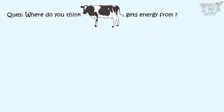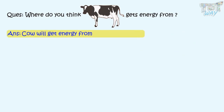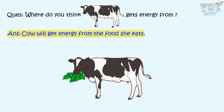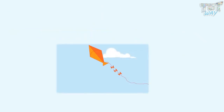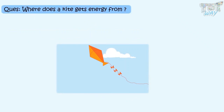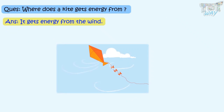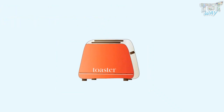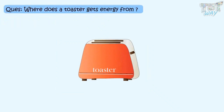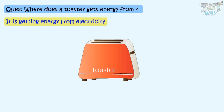Where does the cow get energy from? The cow gets energy from the food she eats. A kite flies high in the sky — where is it getting energy from? It's getting energy from the wind. A toaster — where does it get energy from? It gets energy from electricity.